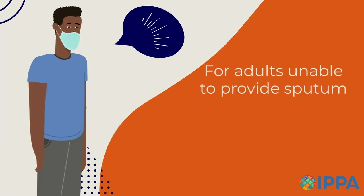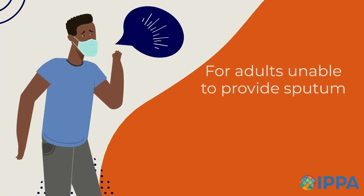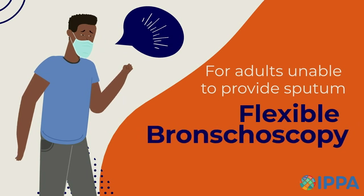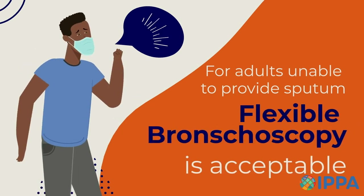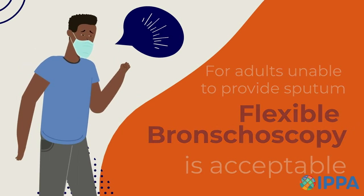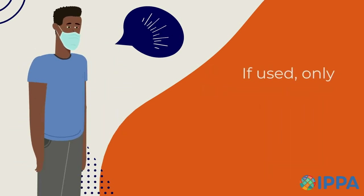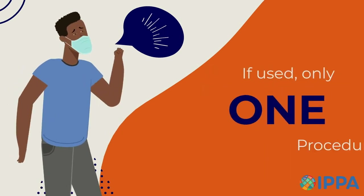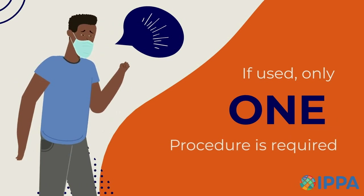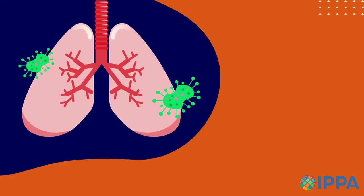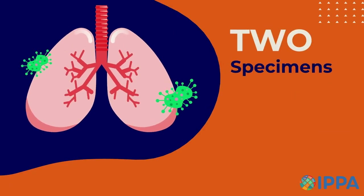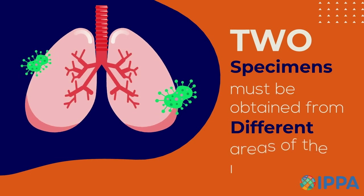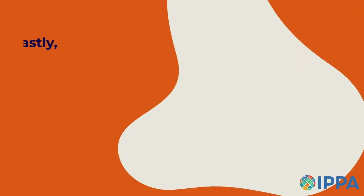If an adult is unable to provide sputum, flexible bronchoscopy is acceptable for obtaining a specimen. If bronchoscopy is used, only one procedure is required. During the bronchoscopy, two specimens must be obtained from different areas of the lung.